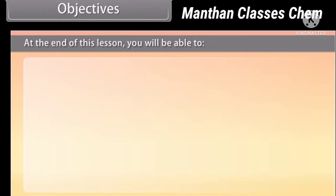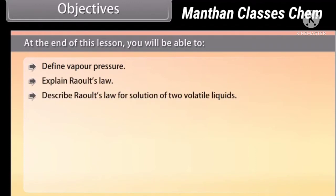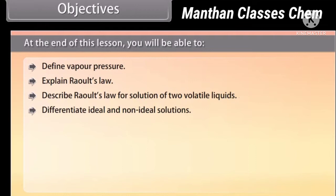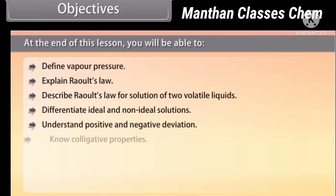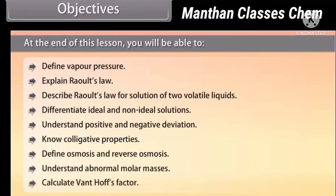At the end of this lesson, you will be able to: define vapor pressure, explain Raoult's law, describe Raoult's law for solution of two volatile liquids, differentiate ideal and non-ideal solutions, understand positive and negative deviation, know colligative properties, define osmosis and reverse osmosis, understand abnormal molar masses, and calculate Van't Hoff's factor.